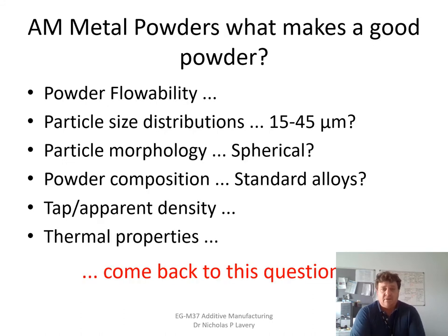The key questions are: what makes a good powder? Is it the flowability, the size distributions — should they be 15 to 45 microns? Should particles be perfectly spherical, or is a distribution acceptable? Must they be spherical at all? We'll touch on composition and whether standard alloy compositions are applicable for additive manufacturing, but will focus more on properties like density and thermal properties of the powder.